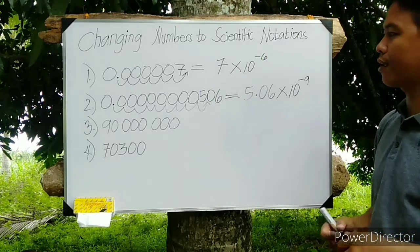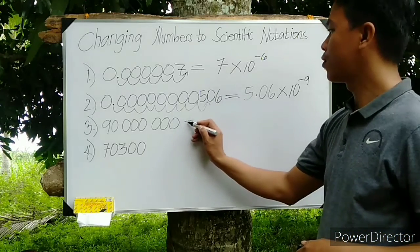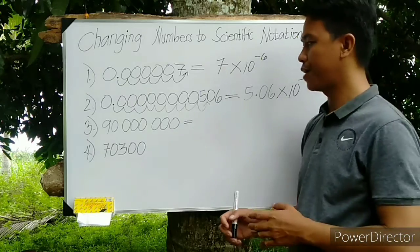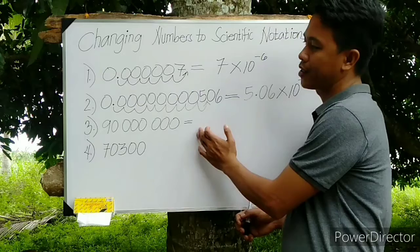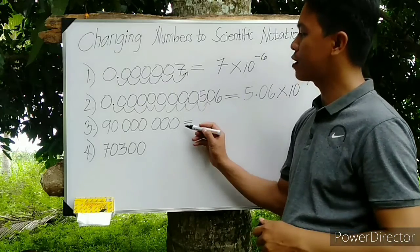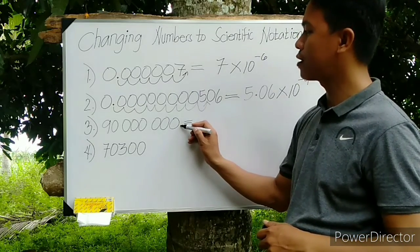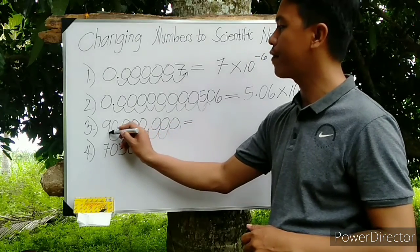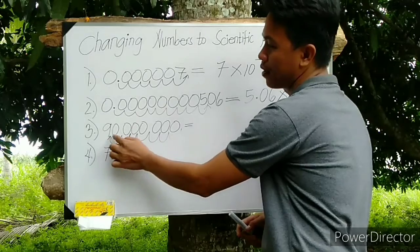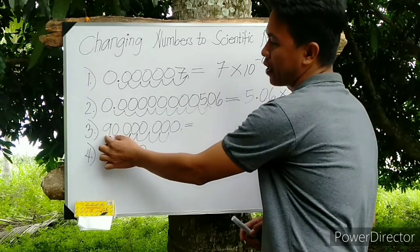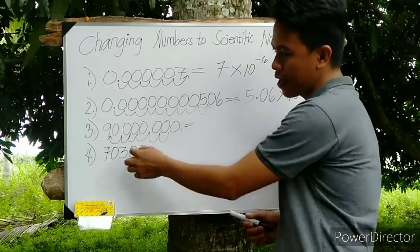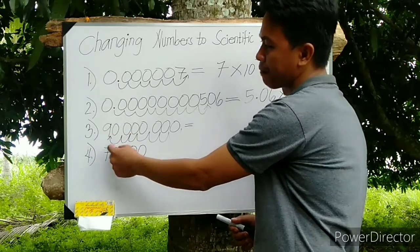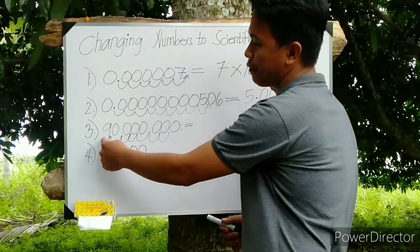For number 3, this is a large number, so our movement here is coming from right to left. So we will start here. Let's count: 1, 2, 3, 4, 5, 6, 7. We will end here in between 9 and 0, so that the value of A is equal to 9.